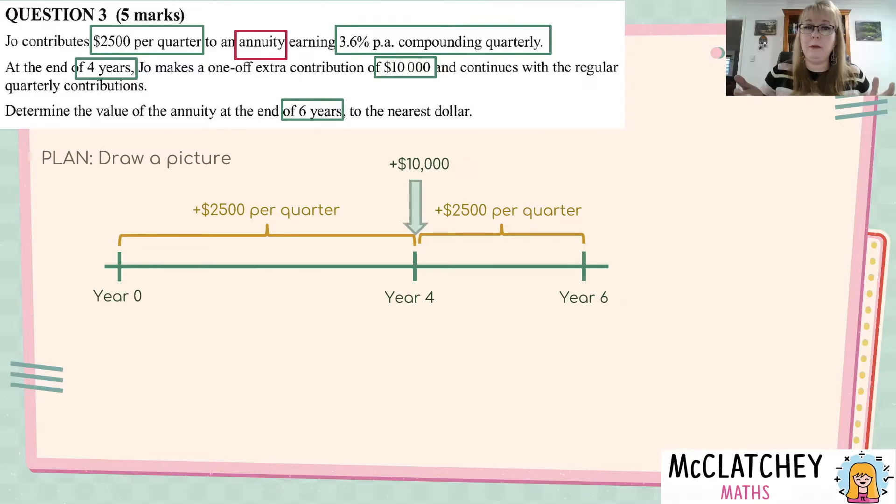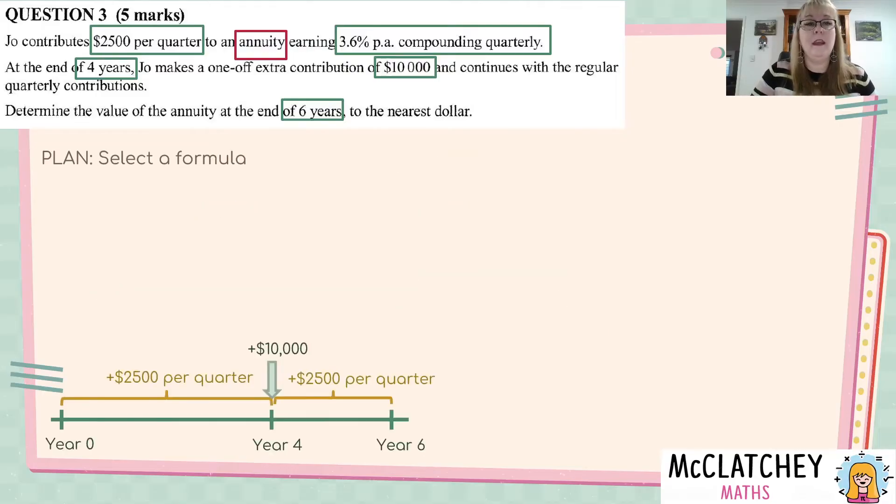The best way to approach this problem is to treat the annuity component, the regular contribution, separate from the $10,000. So, that contribution that you are contributing, $2,500 four times a year, that will go for six straight years as though it's uninterrupted. The extra $10,000 that she puts in the bank is also going to be compounded, but it's going to be compounded not as an annuity, but just as regular compound interest. So, we're going to break the investment into two different parts.